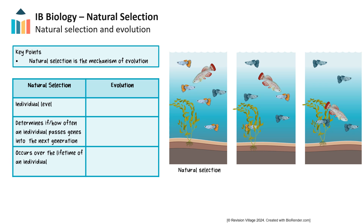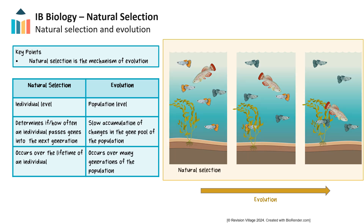Natural selection is the process by which certain traits become more common in a population because they increase an individual's chances of survival and reproduction, thereby influencing the frequency of genes passed into the next generation. Evolution, on the other hand, occurs at the population level. It's a slow accumulation of changes in the gene pool of the population, and it occurs over many generations as a result of natural selection.